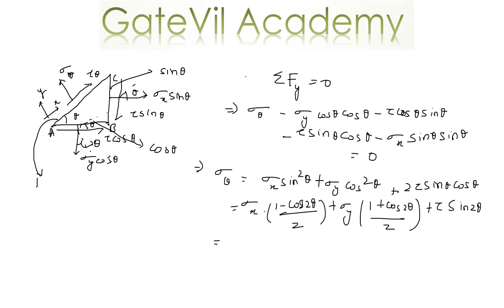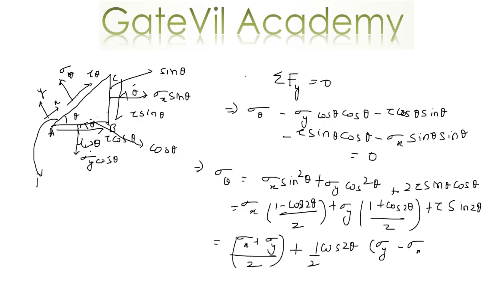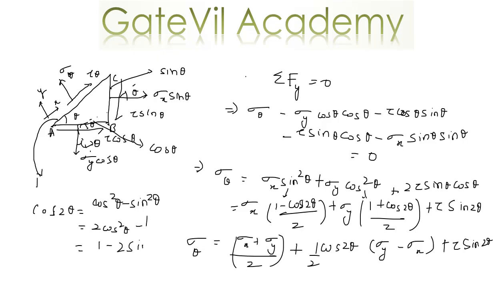After rearranging, we can write Sigma theta as (Sigma X plus Sigma Y) over 2, plus (Sigma Y minus Sigma X) over 2 times cos 2 theta, plus tau sine 2 theta. This uses the identity cos 2 theta equals cos squared theta minus sine squared theta, which becomes 2 cos squared theta minus 1 or 1 minus 2 sine squared theta.